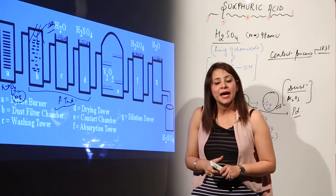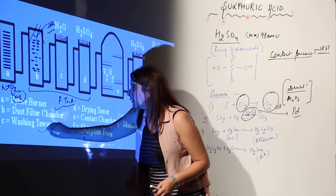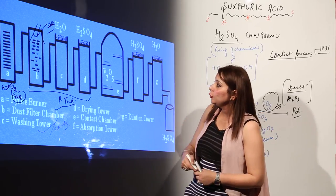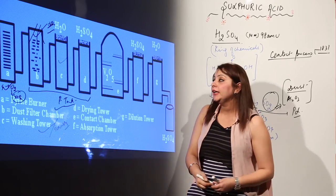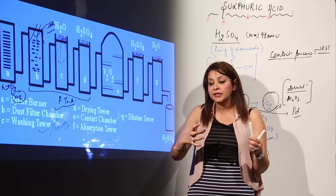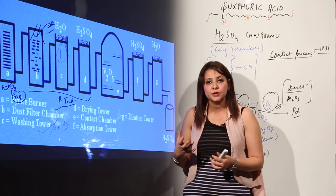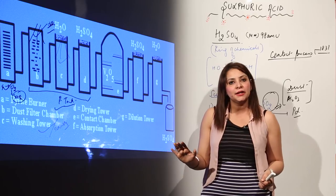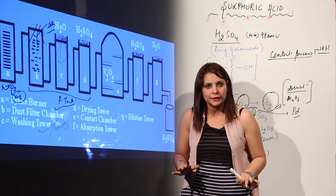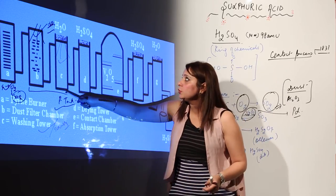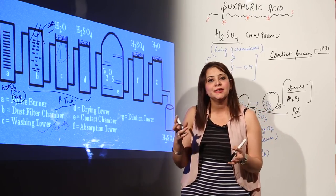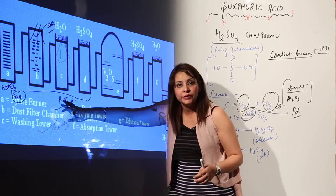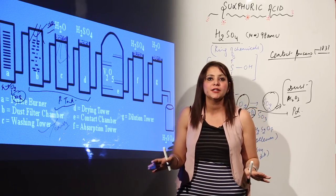From tank B, SO2 is fed into tank C, called the washing tower or scrubbing tower. A heavy stream of water is passed through it. This water wets the remaining dust particles still present in the SO2. When the dust particles become wet, they settle down, and the SO2 becomes completely free from all dust particles.